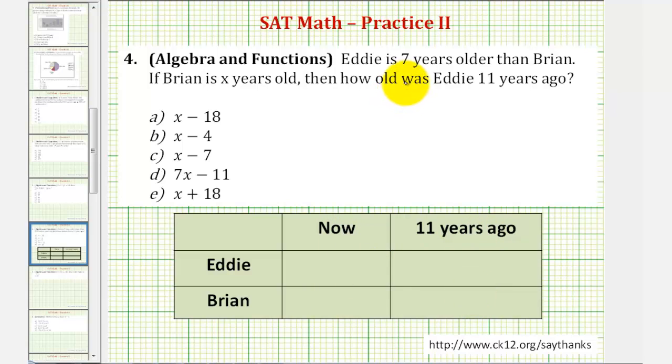So going back to the question, notice how we're told that Eddie is seven years older than Brian, and right now Brian is x years old. So to start, for Brian's age, we'll put an x, which is how old he is now.